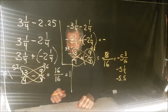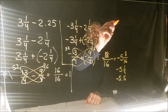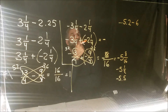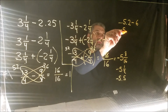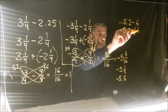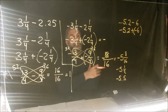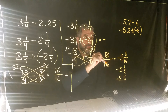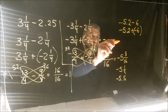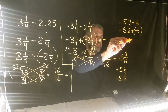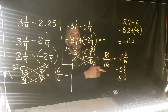One more: negative 5.2 minus 6. Apply keep-change-change: keep negative 5.2, change subtraction to addition, change 6 to negative 6. Now they have the same sign, so just add. The answer is negative 11.2.